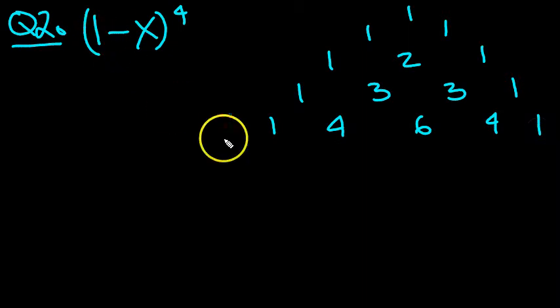Now, the 1 is going from the left, so it will be 1 to the 4, 1 cubed, 1 squared, and 1 to the power of 1. Then minus x is the second term, isn't it?